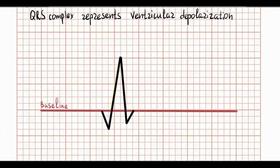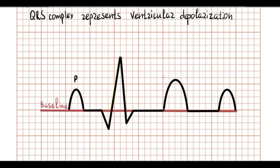The QRS complex represents ventricular depolarization. Let's check the QRS complex terminology. If the wave is above the baseline, this wave is called positive. If the wave is below the baseline, this wave is called negative. As a baseline, we usually use the PQ or TP segment.